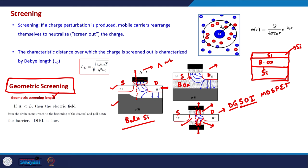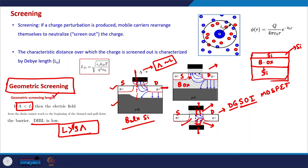The length up to which electric field lines are terminated is the screening length, and we try to make sure the screening length is smaller than the channel length so that DIBL will be low — the drain electric field will not impact the source side. Ideally, the total channel length should be greater than three times the screening length. This is generally one of the standards kept in mind by device designers while designing nano MOSFETs.